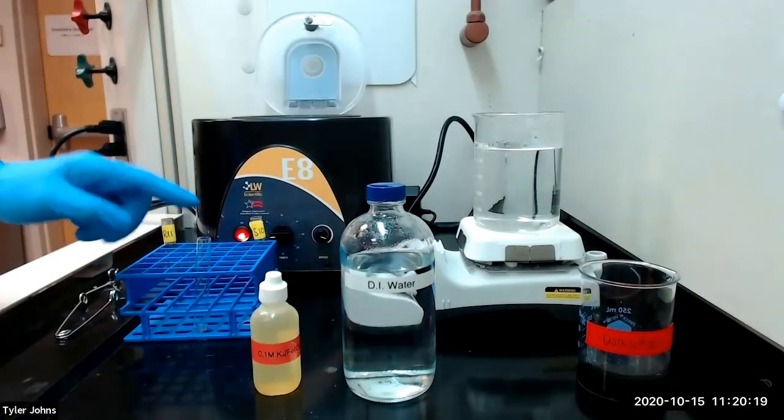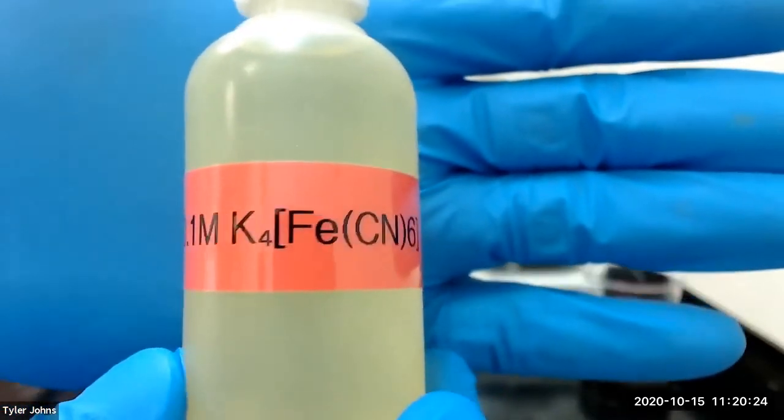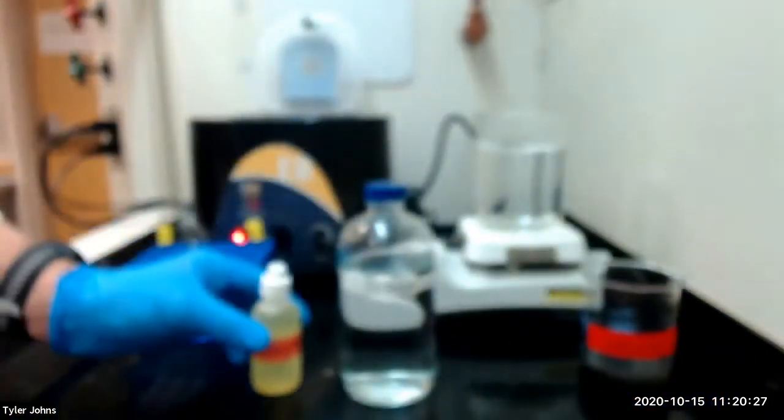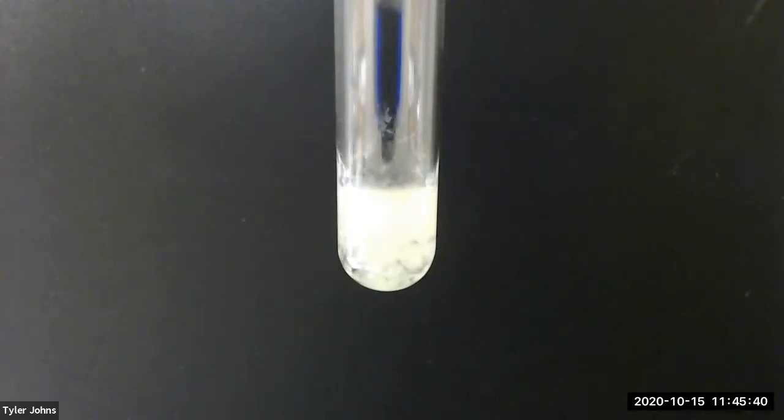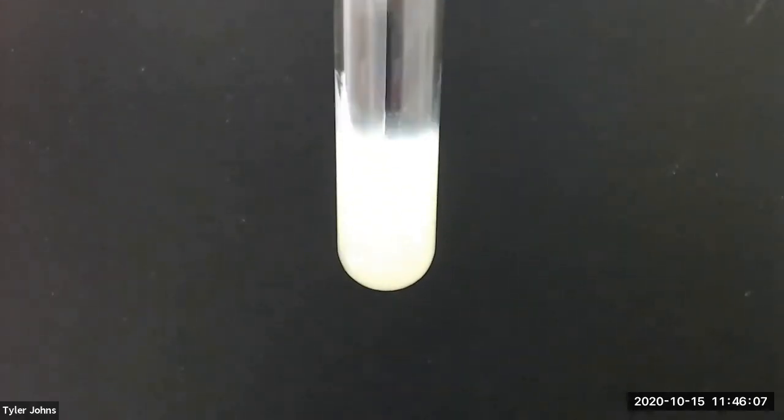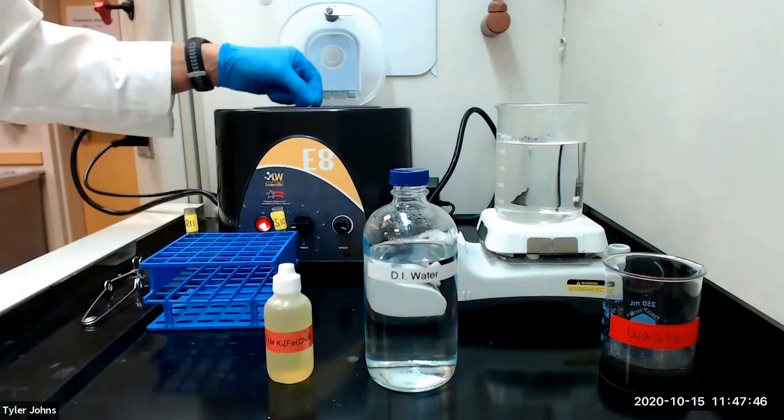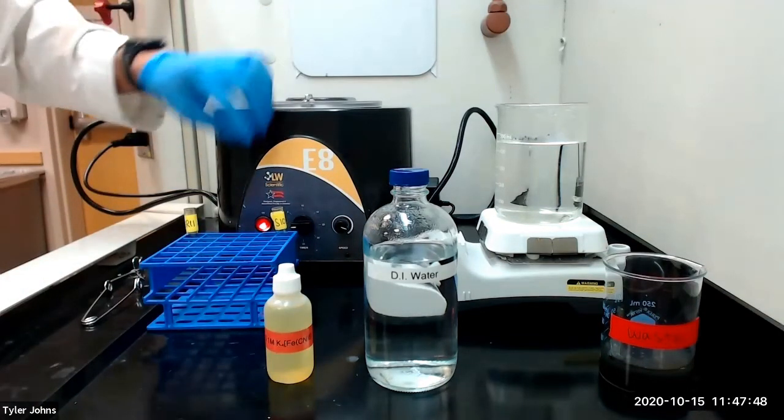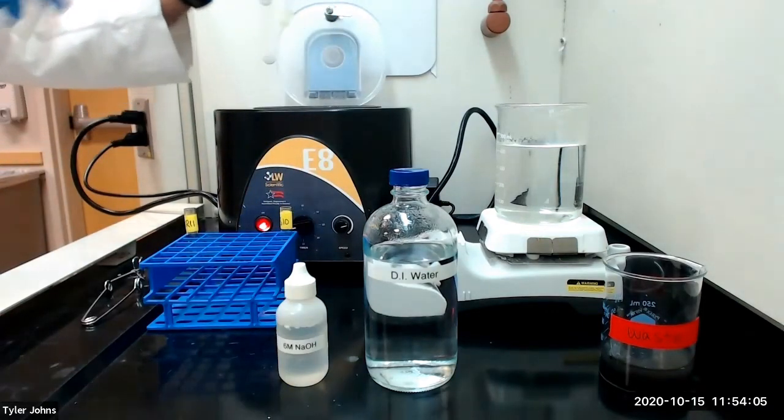To our clear solution, we will add 10 to 20 drops of 0.1 molar potassium ferrocyanide and stir well. We will then centrifuge our mixture. This is what our mixture looks like after centrifugation.